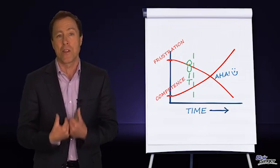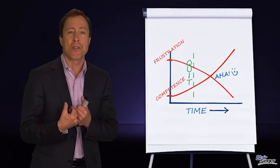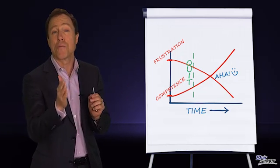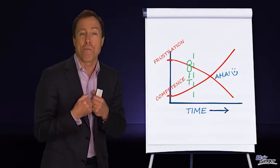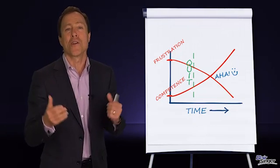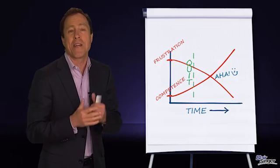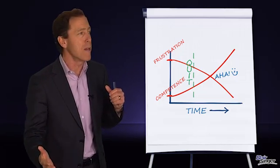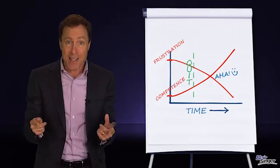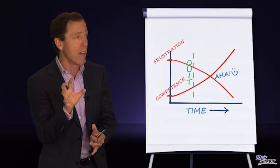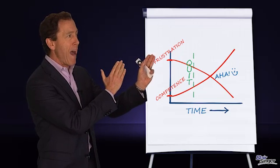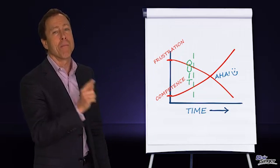That's why in the programs that we do, we put you into exercises so we compress the time. Like I told you earlier, if you're in a sales program with me, we get you to sell $10,000, $15,000, $20,000, $30,000 in 10 minutes. Now it may take you three months to do that normally, but by compressing the time and creating the right context, the right environment, the right coaching, we can slide that whole curve back till you get the aha moment before you can quit.